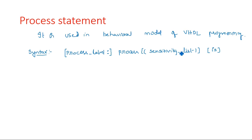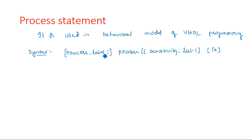The process label and sensitivity list are optional. Generally we write: process of input statements — for example, if a, b, c are the inputs then we write process(a, b, c). If you want to add the 'is' keyword you can add it otherwise you can leave it. If a behavioral coding has several processes — n1, n2, n3 — then to refer to a particular process statement we use a label.